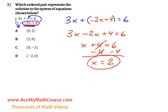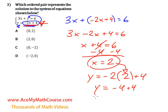Now what is y? Taking the second equation, we know that y equals negative 2x plus 4. Now we can just plug in the 2. Negative 2 times 2 is negative 4 plus 4 is 0.